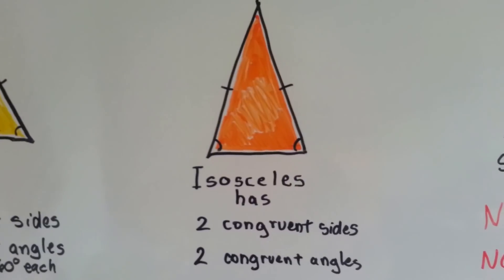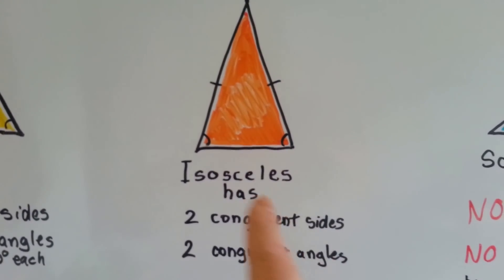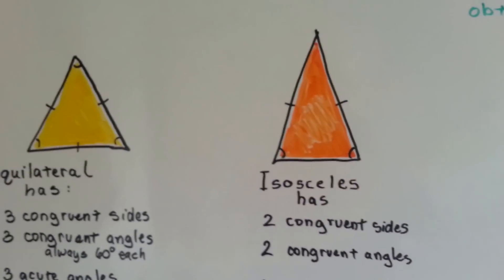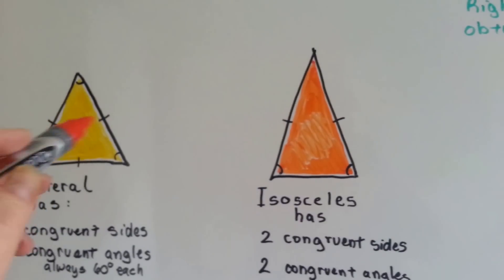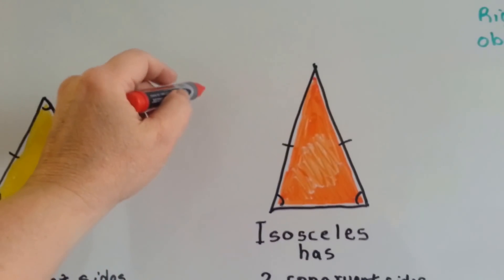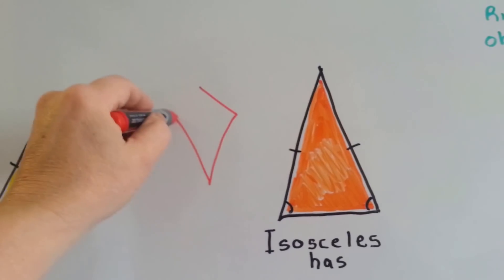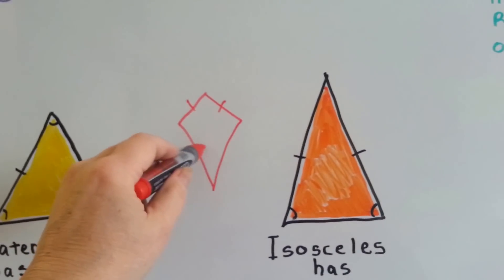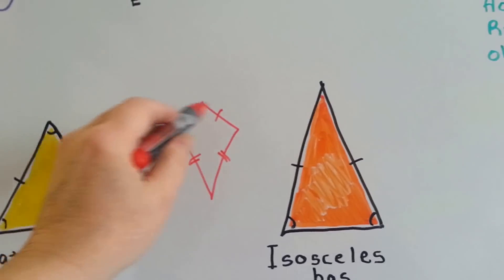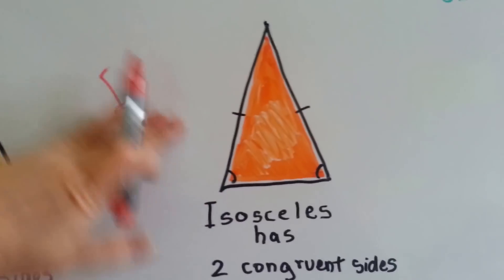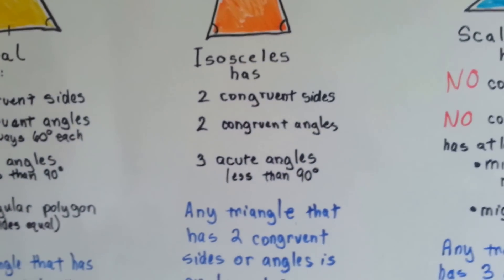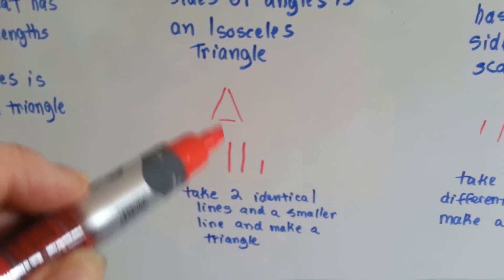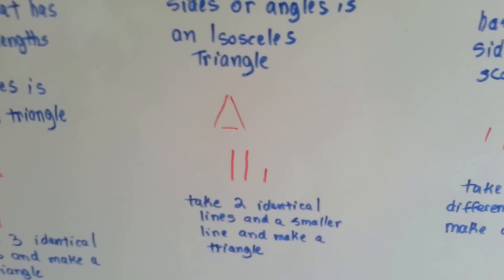An isosceles triangle has two congruent sides, two equal sides, and two congruent angles — see these two bottom ones? It has three acute angles that are less than 90 degrees. These little marks tell you that the lines are congruent. If a polygon had one set of congruent sides not congruent to another set, you'd see two tick marks for one set and one for the other — we'll talk about that in the next video with quadrilaterals. Any triangle that has two congruent sides or angles is an isosceles triangle.